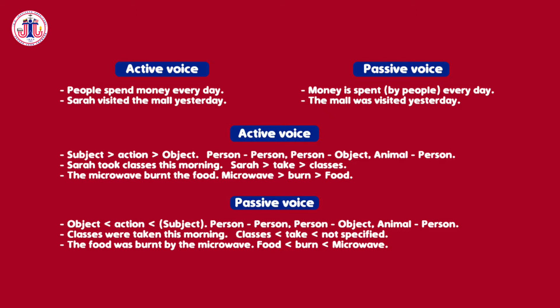So: 'People spend money' becomes 'Money is spent'; 'Sarah visited the mall' becomes 'The mall was visited.' In the active voice, someone or something does an action. In the passive voice, someone or something receives an action. The structure of the active voice is a subject that does an action, and that action affects an object. Remember that this object can be a person.